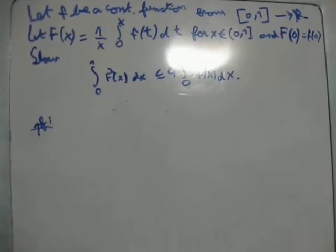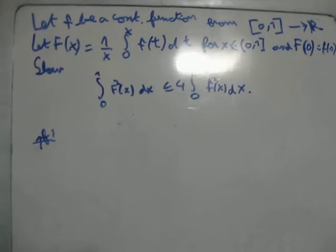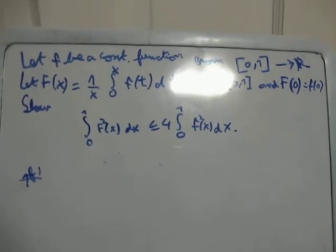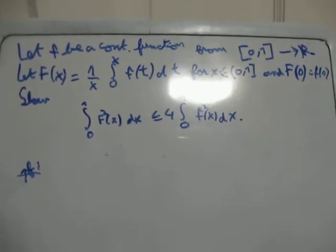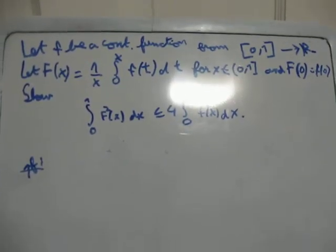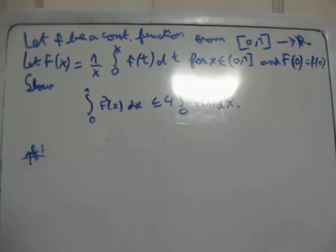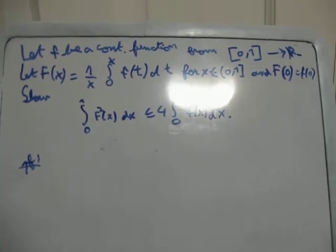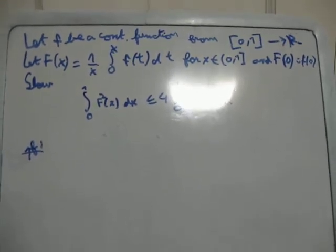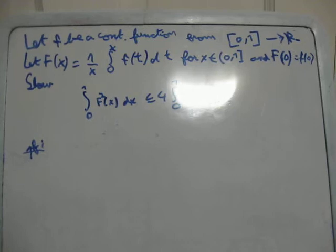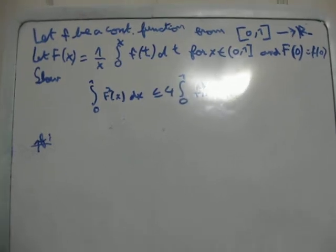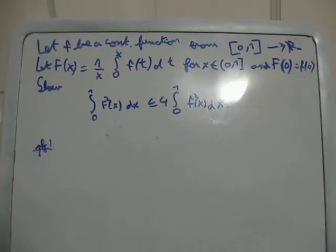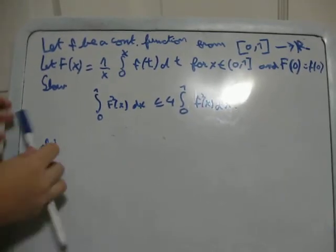Let big F of x equal 1 over x times the integral from 0 to x of little f of t dt, for x in (0, 1], with F of 0 equal to little f of 0. Then show this.